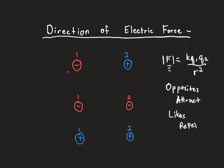Looking at these two charges in the first line: charge 1 is negative, charge 2 is positive. I can calculate how big the force between the two is by using Coulomb's Law, and I can find the direction by looking at the signs of the charges. If I want to know the direction that the force charge 2 is going to have on charge 1, I denote this with subscripts — the force of charge 2 on charge 1.